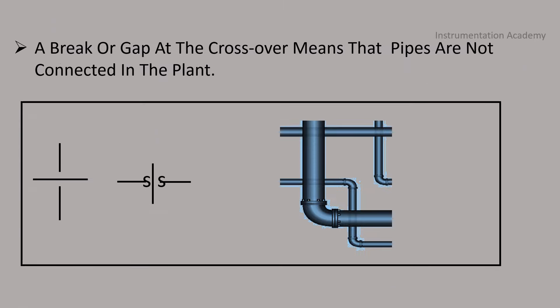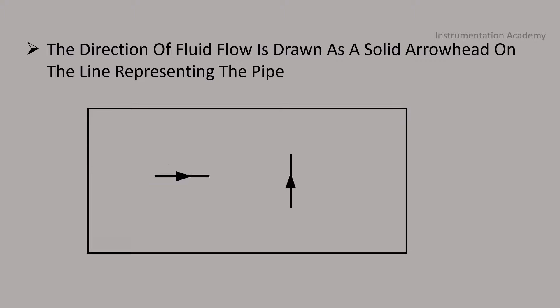If the drawn lines cross over each other but show a break or gap at the crossover, it means that pipes are not connected in the plant. A P&ID shows the direction of a fluid stream flowing within a pipe. The direction of flow is drawn as a solid arrowhead on the line representing the pipe.